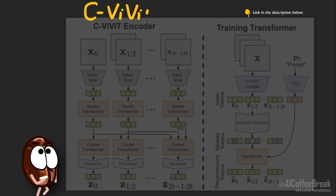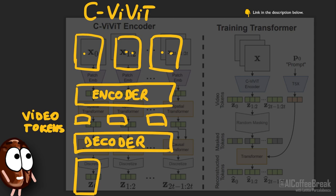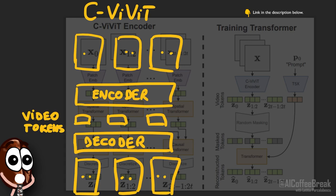For the video part, we first have a transformer that knows something about video only. You can think of this first transformer, called CViViT, as a neural video encoder — or as Ms. Coffee Bean likes to say, a dimensionality reducer on steroids.